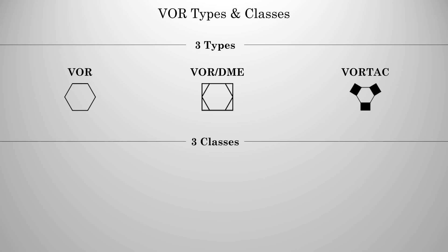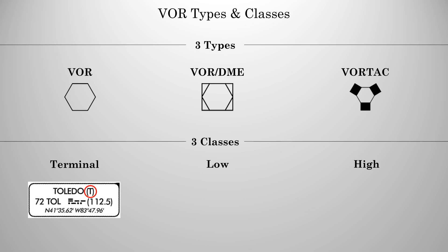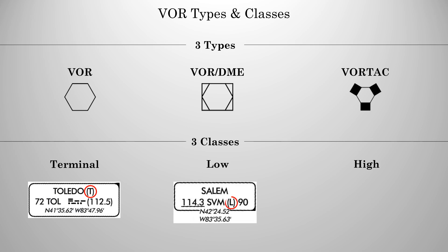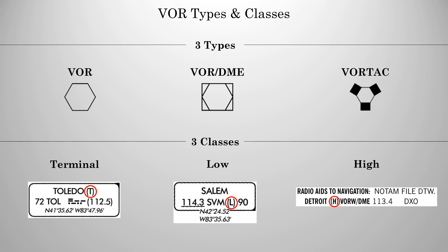We also have three classes of VOR: terminal, low, and high. There are a few different ways to identify a VOR's class, but one way to identify a terminal VOR is by the T in their information. Likewise, low VORs can be identified by an L, but only on a high altitude chart. High VORs will have an H next to their name under the chart supplement.